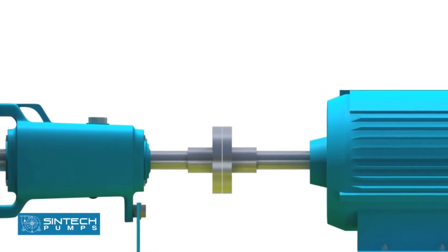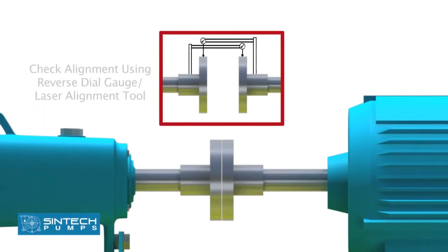In the subsequent step, the pump and the motor are aligned to the final tolerance using a reverse dial gauge or a laser alignment tool.